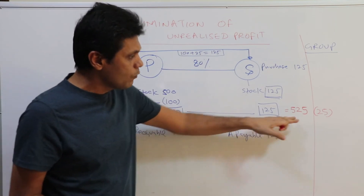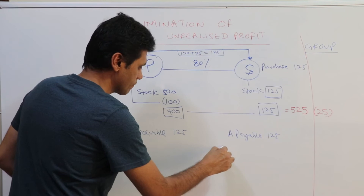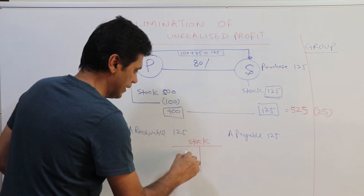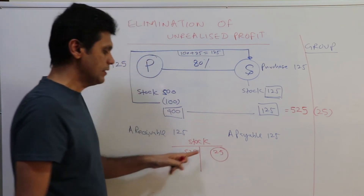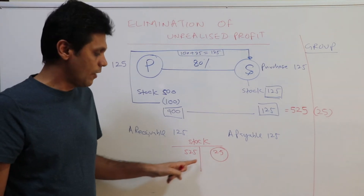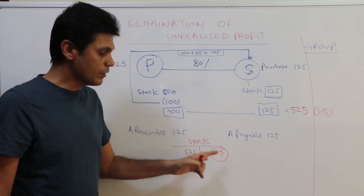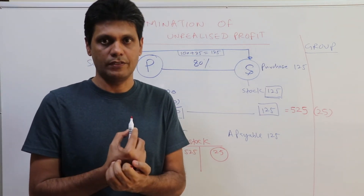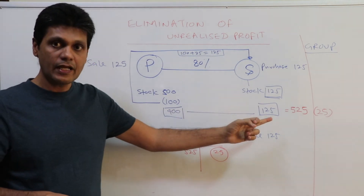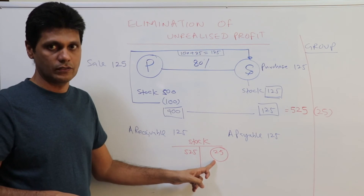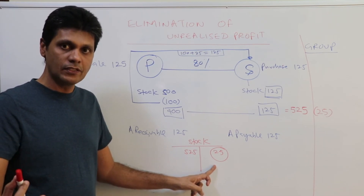What is the double entry? Stock is a debit balance, so at $525 it sits as a debit. To eliminate the unrealized profit, we credit the stock account by $25. By crediting, we are eliminating the unrealized profit from stocks. When we credit the stock account, some other account has to be debited — what is that account?